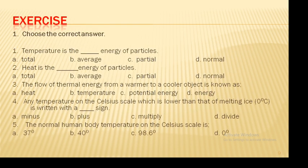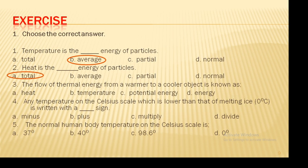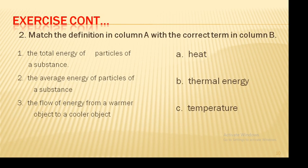Now here comes the exercise of this unit. Open your book, page number 80. Number 1: Choose the correct answer. 1. Temperature is the average energy of particles. 2. Heat is the total energy of particles. 3. The flow of thermal energy from a warmer object to a colder object is known as heat. 4. Any temperature on the Celsius scale lower than that of melting ice is written with a minus sign. 5. The normal human body temperature on the Celsius scale is 37 degrees Celsius.